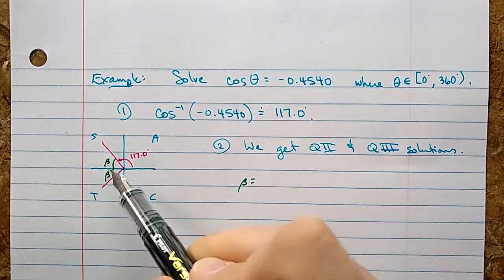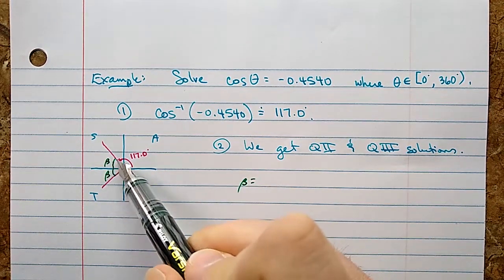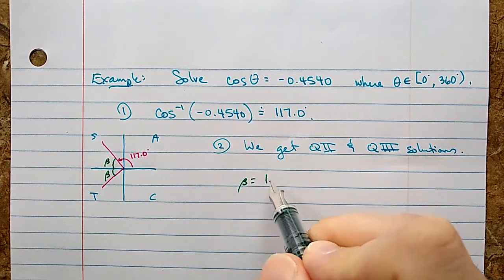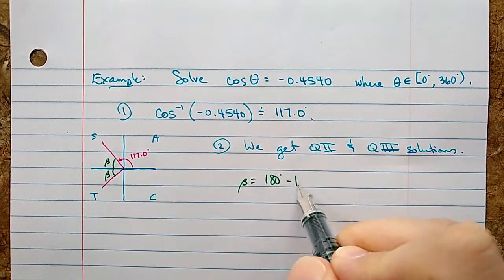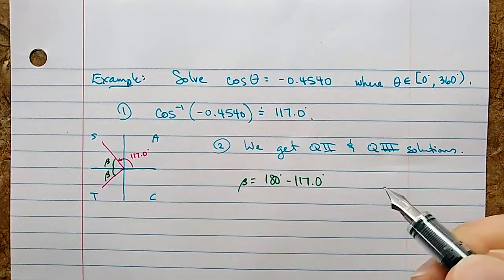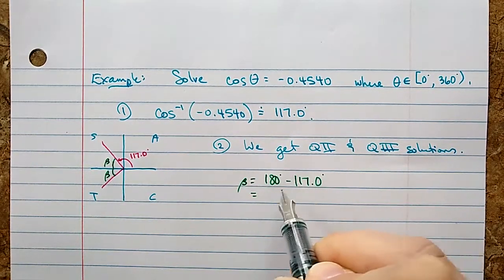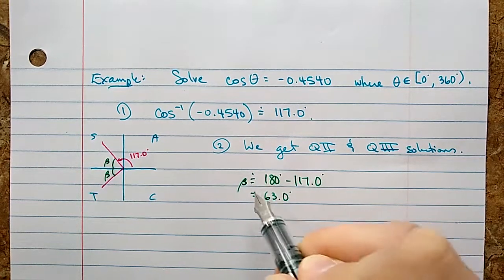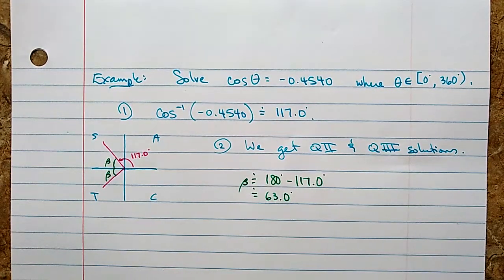What is the related angle beta that goes there and then also goes there? So we have to do a quick calculation to find that out. Beta is, well, we're at 180 and subtract off 117, and we'll be left with the little slice that's there. 180 degrees minus 117.0 degrees is 63.0 degrees approximately.